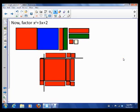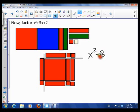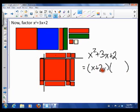So that means that x squared plus 3x plus 2 is actually broken down into x plus 2 times x plus 1. So that's using algebra tiles.